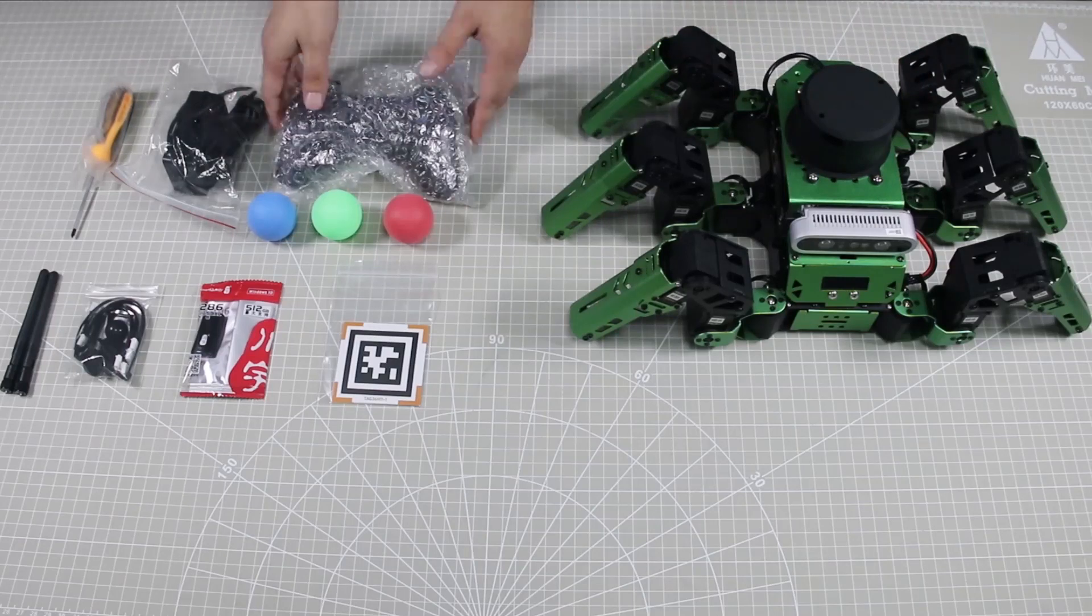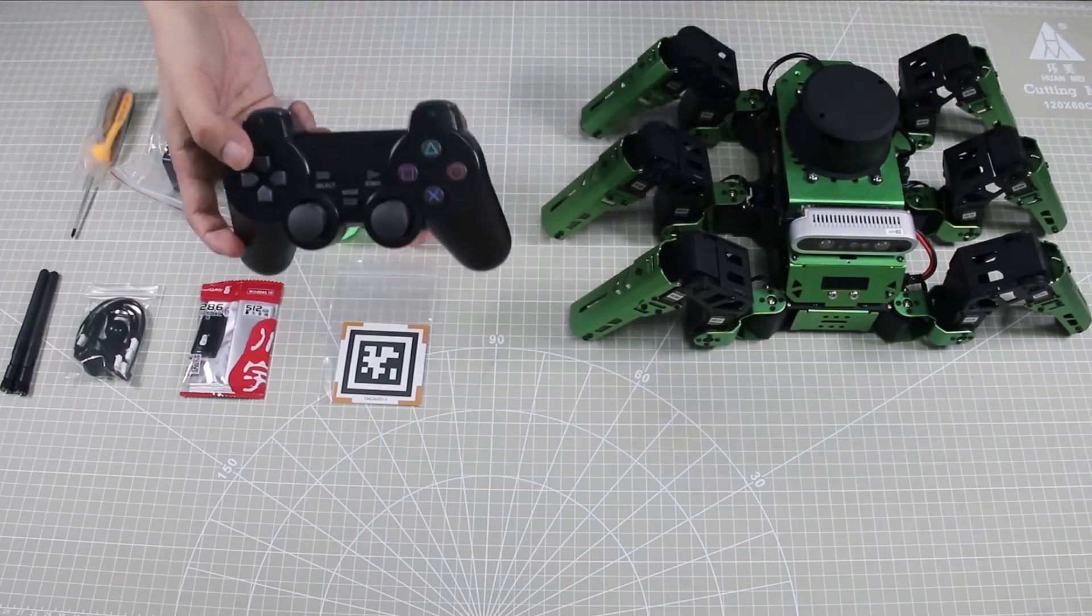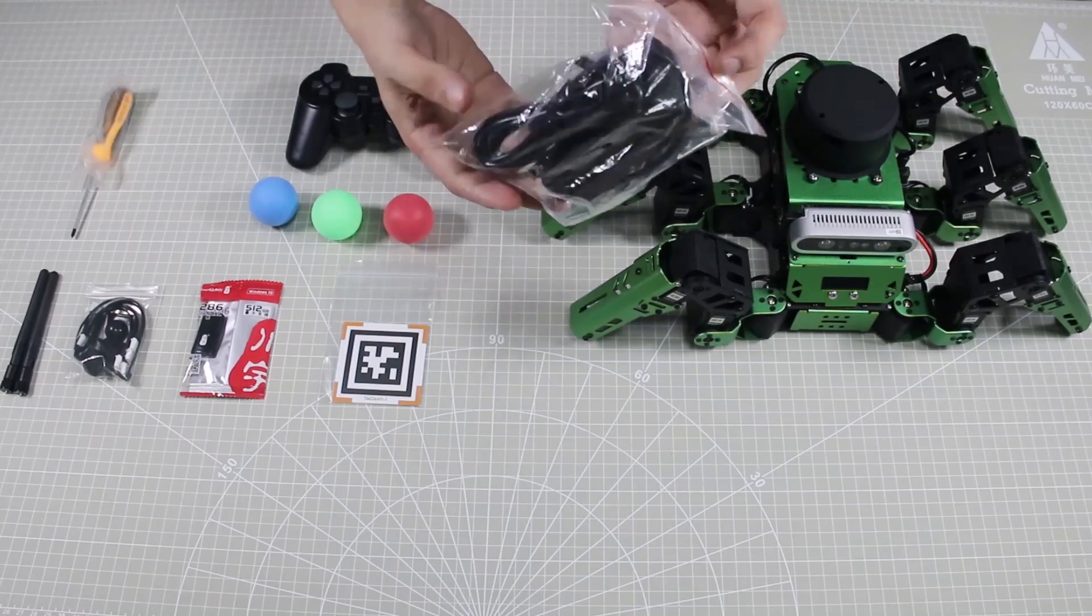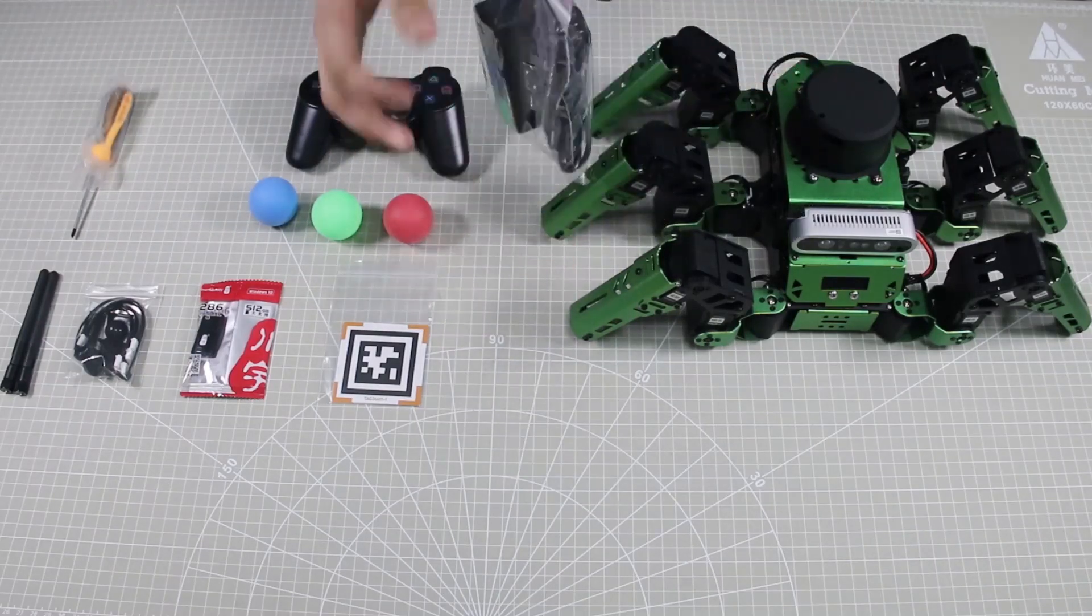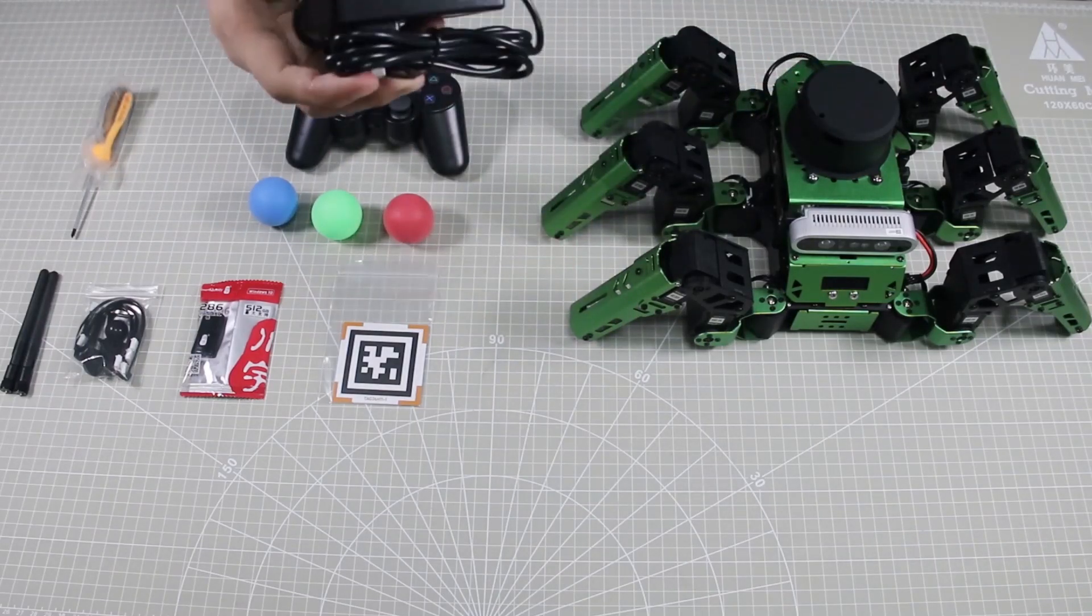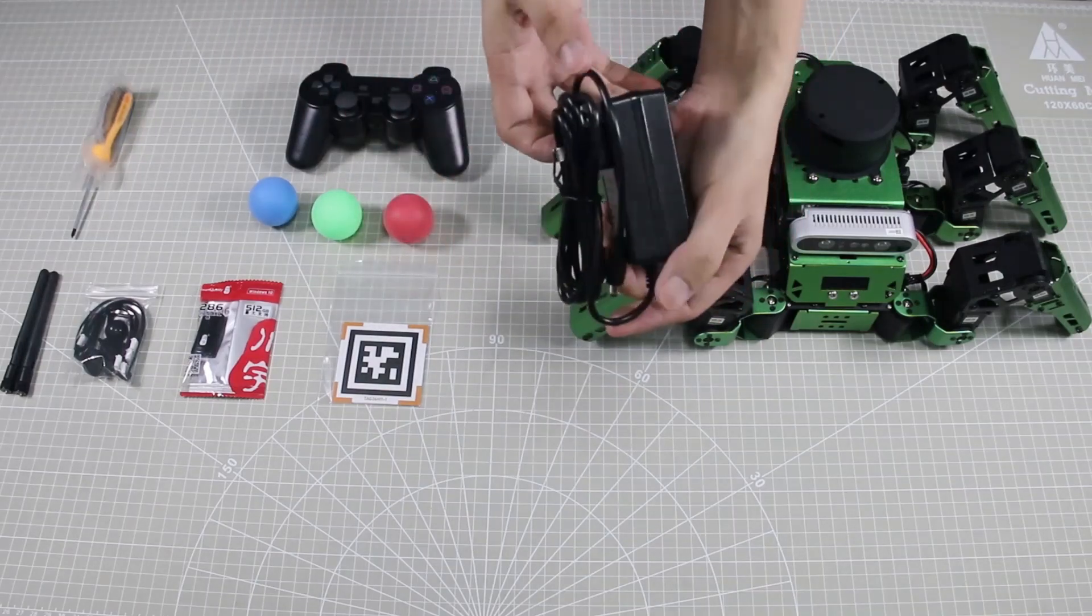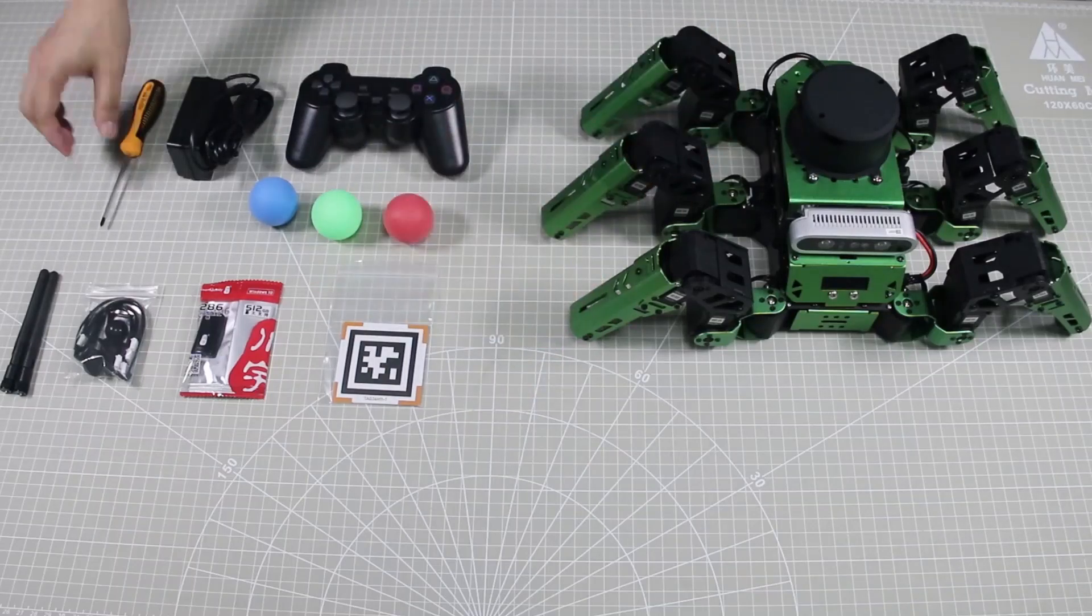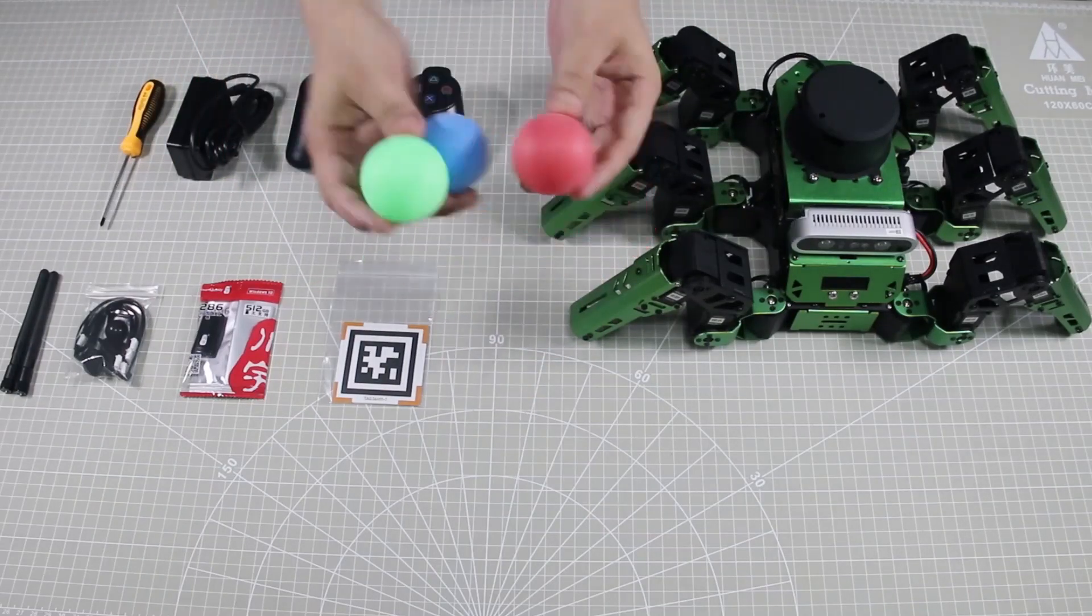You will get a wireless handle, a charger, a screwdriver, and three parts you can use in robot games.